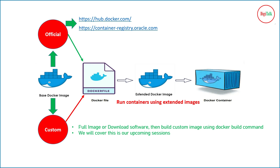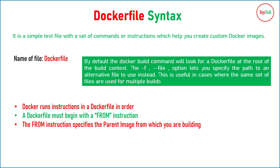Once the software is downloaded on the host, you create your own base image, and once that base image is created you can extend it with the help of a Dockerfile. The key difference between official and custom images: official images are pre-built so you can directly pull and customize them, while with custom images you download the software, create the base image, and then extend it according to your requirements.